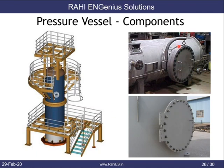These are manway closures. There are two types of attachments: a manway davit and a hinge. Both constructions help facilitate the opening and closing of the blind flange for the manway without placing the full weight of the blind flange on the operator.